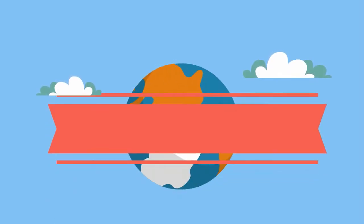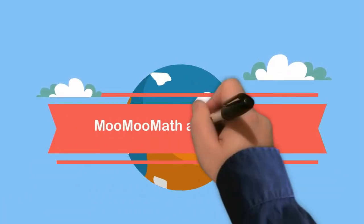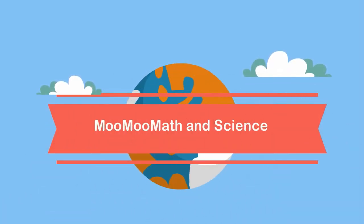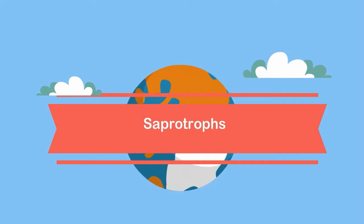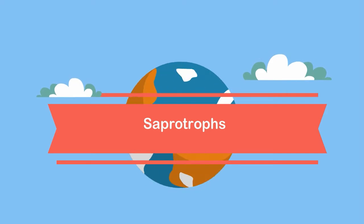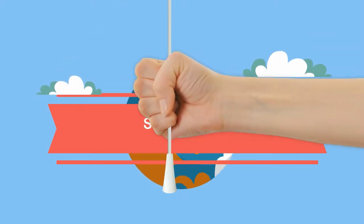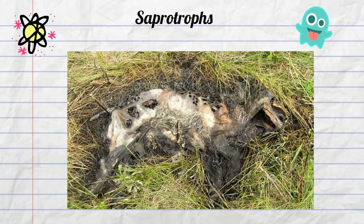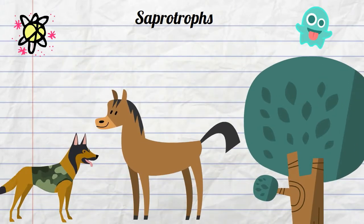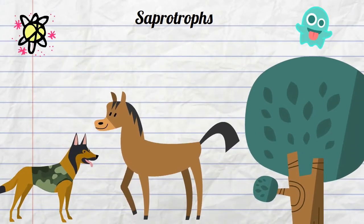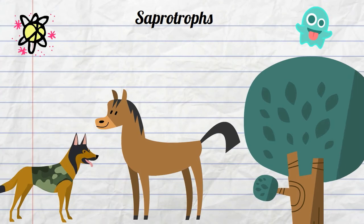Welcome to MooMooMath and Science. In this video I would like to talk about Saphrotrophs. Saphrotrophs are organisms that get their energy from dead and decaying organisms. Saphrotrophs live in or on other organisms and decompose non-living matter.